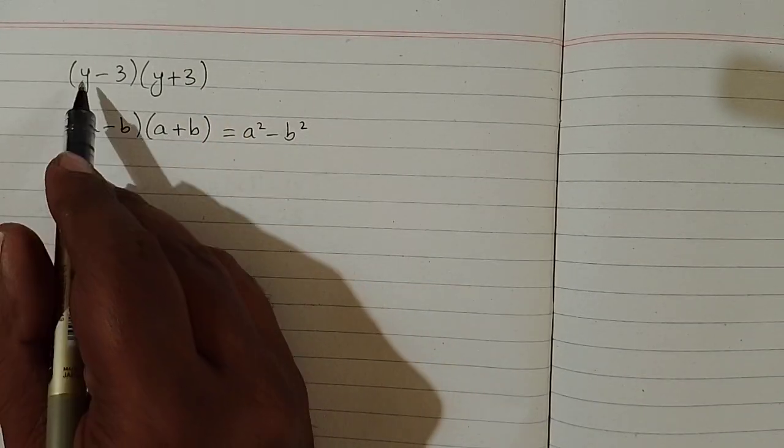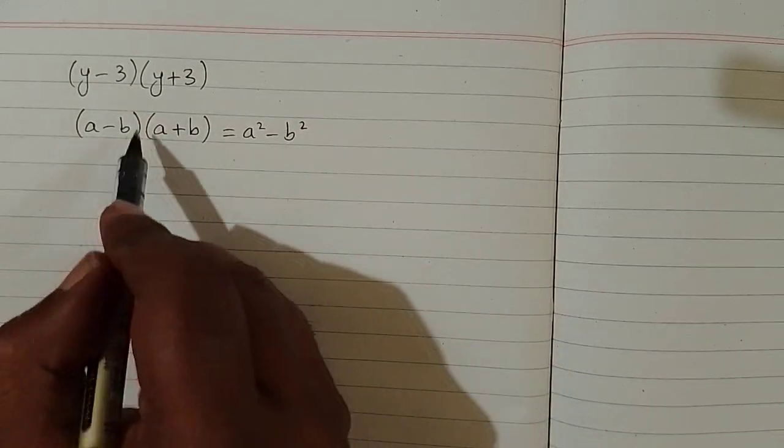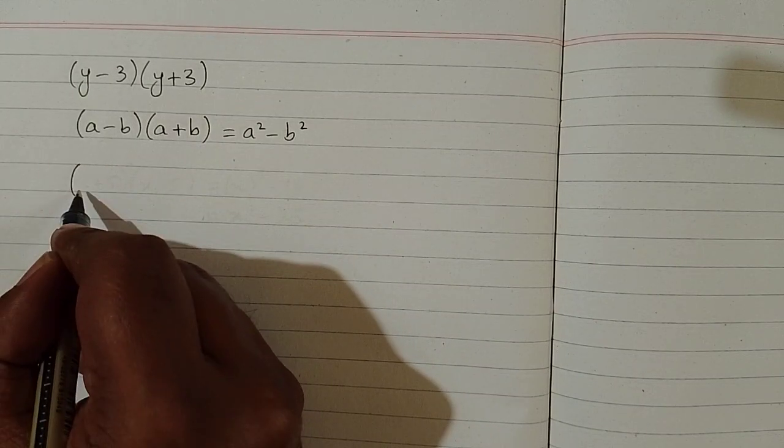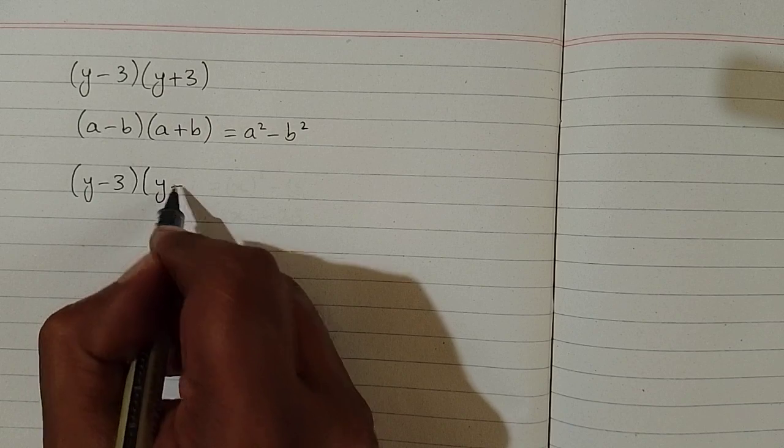So the value of a is y and the value of b is 3. We can apply this formula on this product. First we will write (y-3) multiplied by (y+3).